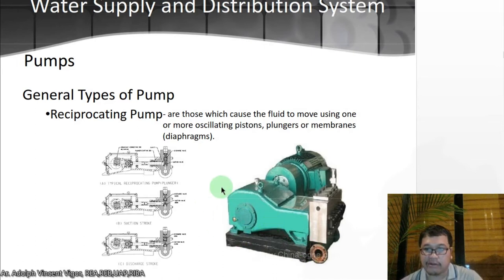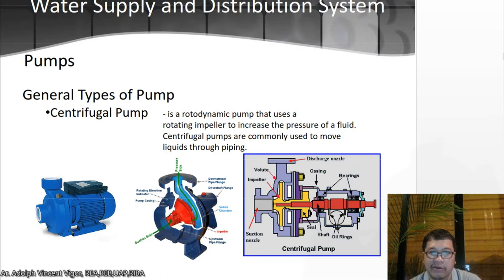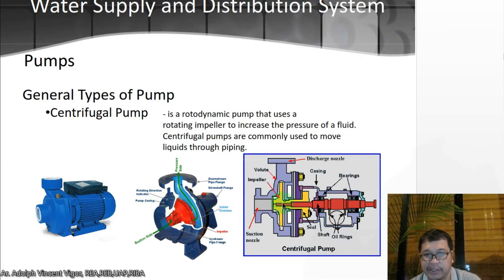You also have the centrifugal pump. It is a rotodynamic pump that uses a rotating impeller to increase the pressure of a fluid. Centrifugal pumps are commonly used to move liquids through piping. Here you have the discharge nozzle and suction nozzle — this is where the fluid or slurry will be suctioned and discharged. The details are more on the mechanical side, but you just need to be familiar with it for when you coordinate with mechanical or sanitary engineers.